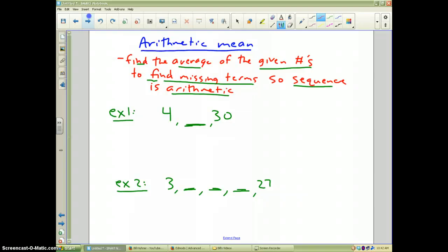Now, how do you do that? Well, very simply, what you do is if there's only one number missing in the middle, you add the two and divide by two, and that will give you your middle number. 30 plus 4 is 34, divided by 2 is 17. 17 is my missing number. Now, you notice, you add 13 to get there, and you add 13 to get there, so it's consistent.